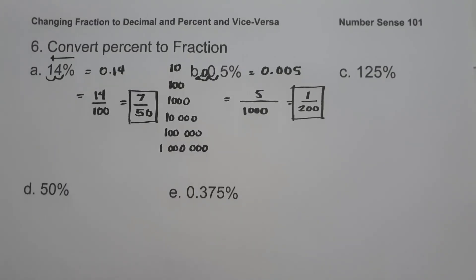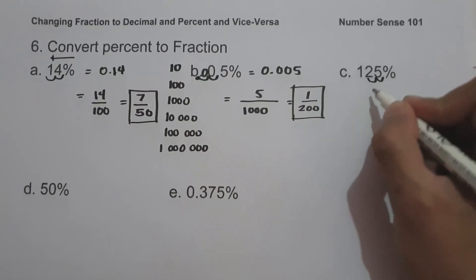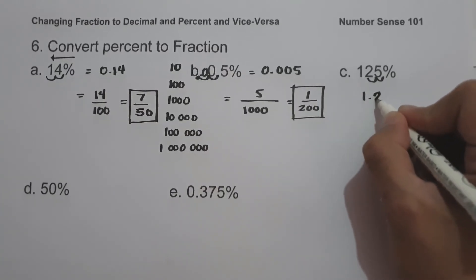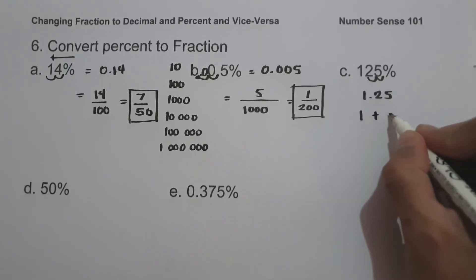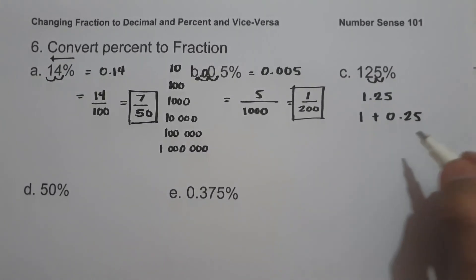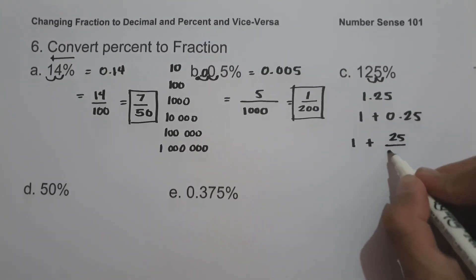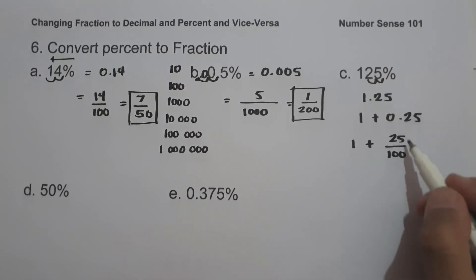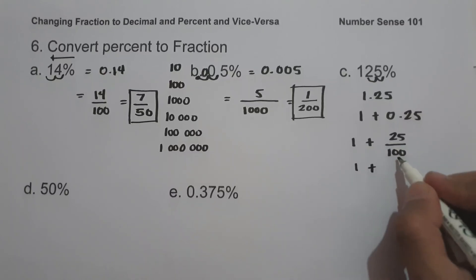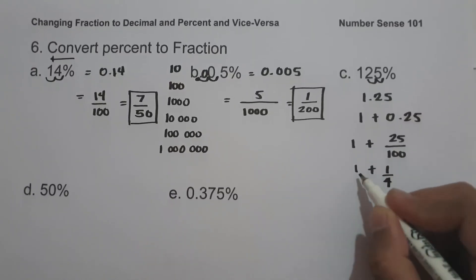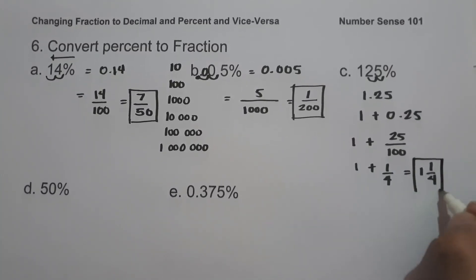On letter C, we have 125%. Moving two decimal places gives us 1.25. We can write 1.25 as 1 plus 0.25, which is 1 plus 25 over 100. Since 25 over 100 simplifies to 1 fourth, we get 1 plus 1 fourth, which is 1 and 1 fourth. This is our answer.